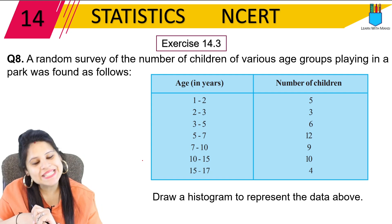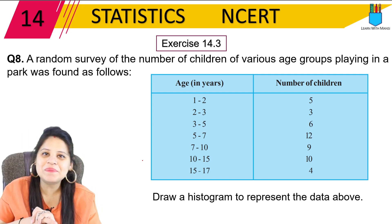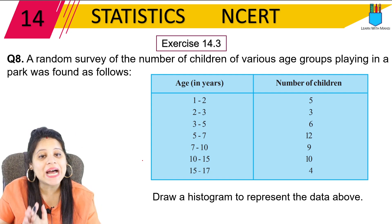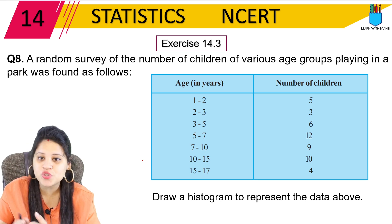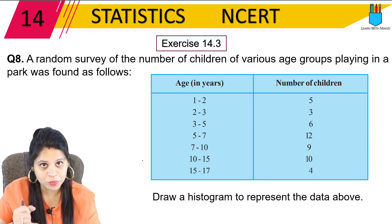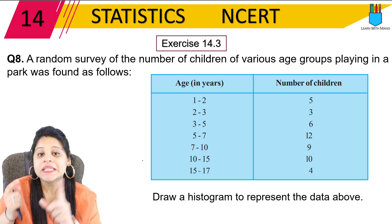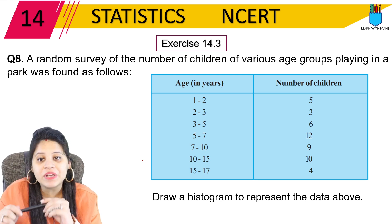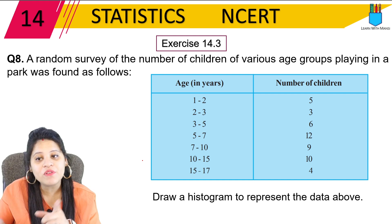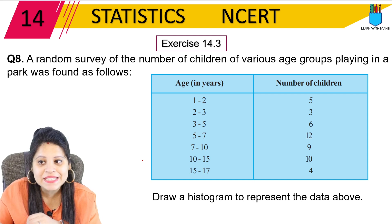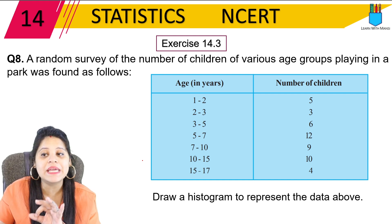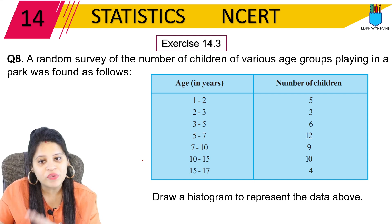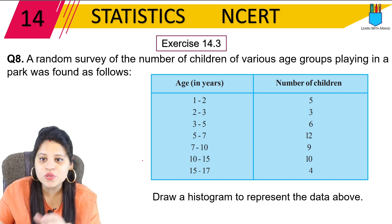Hello my lovely students, this is Mansi. Welcome back to the channel. Now we're going to start with the 8th question of exercise 14.3. The question says: a random survey of the number of children of various age groups playing in a park was found as follows.